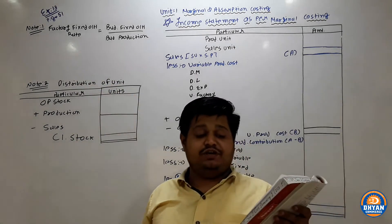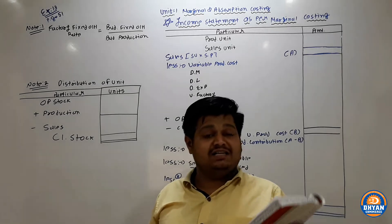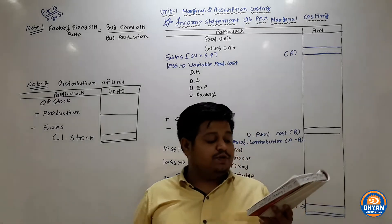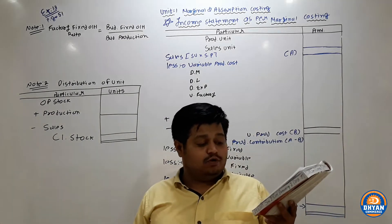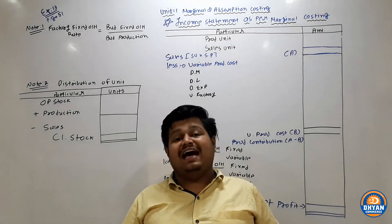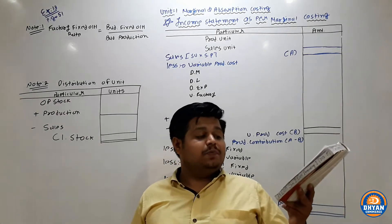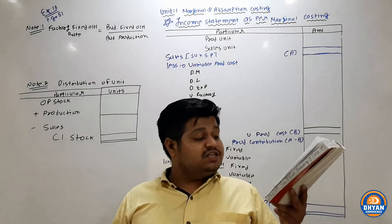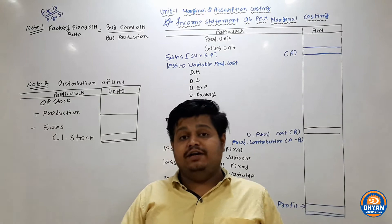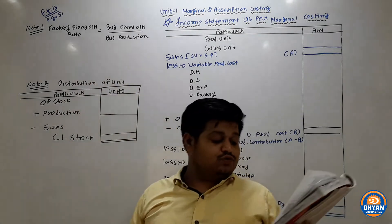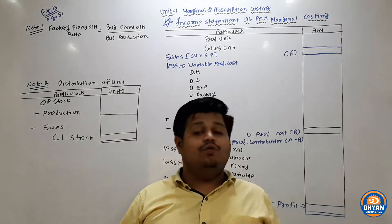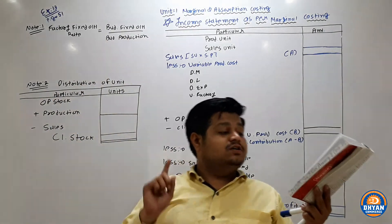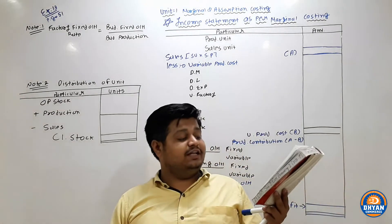Example 13: The following information is extracted from the cost records of Nazmeet Company. Information 1: Production cost of goods produced — as per marginal system Rs. 2,50,000 and as per absorption Rs. 3,00,000. Budgeted production is 12,500 units. Budgeted factory overhead rate can be derived from this. Information 3: Unit of sale = 12,000, Unit of production = 10,000.